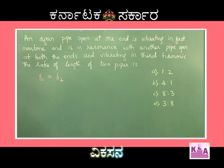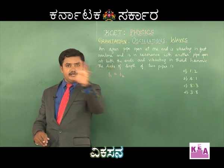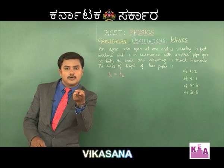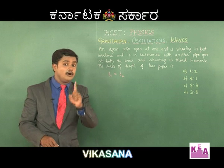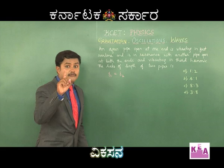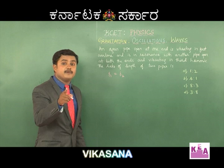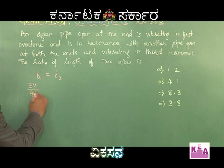From the closed pipe, take the first overtone. You need to know what the first overtone is: F1 is the fundamental frequency, while F2 is the second harmonic which can also be called the first overtone. So the first overtone of the closed pipe has frequency 3V/4L. You need to know this expression: 3V/4L.